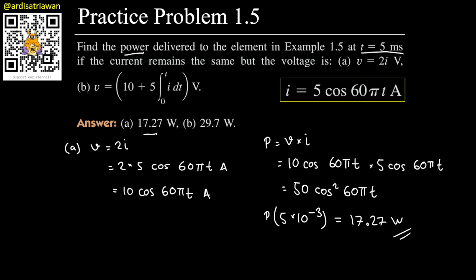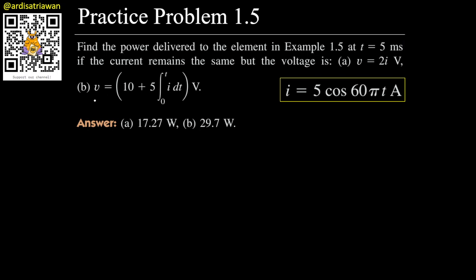The unit is still in seconds inside the expression, which matches the expected answer. Now let's move on to part (b). For part (b), the voltage formula is v = 10 + 5 ∫i dt, so we plug in i = 5 cos(60πt) and integrate from 0 to t.